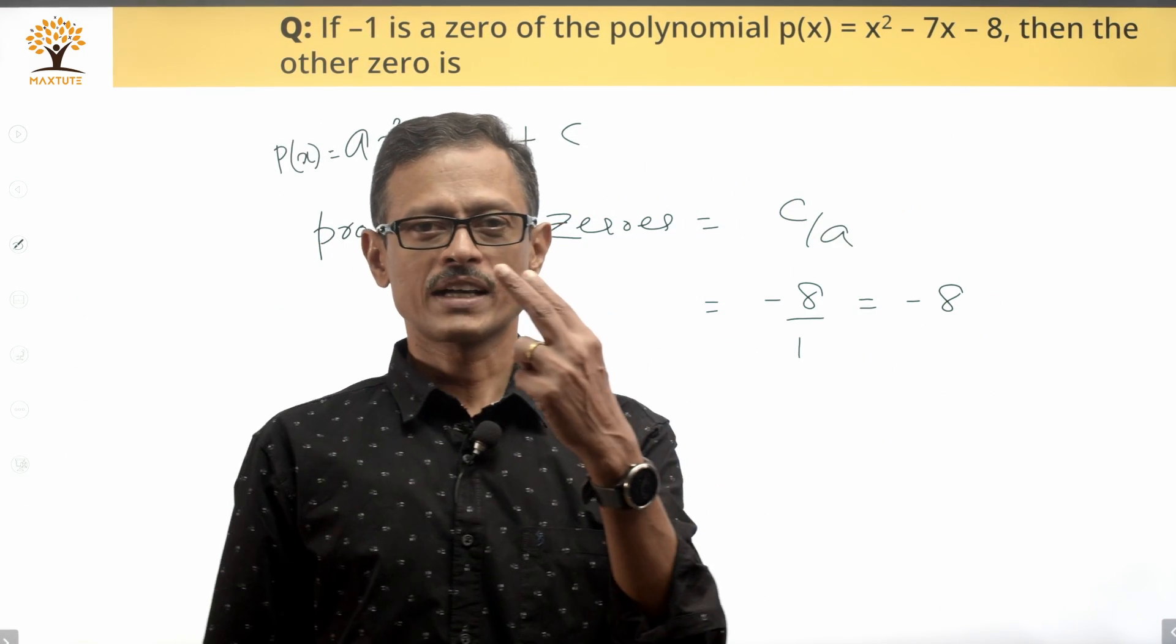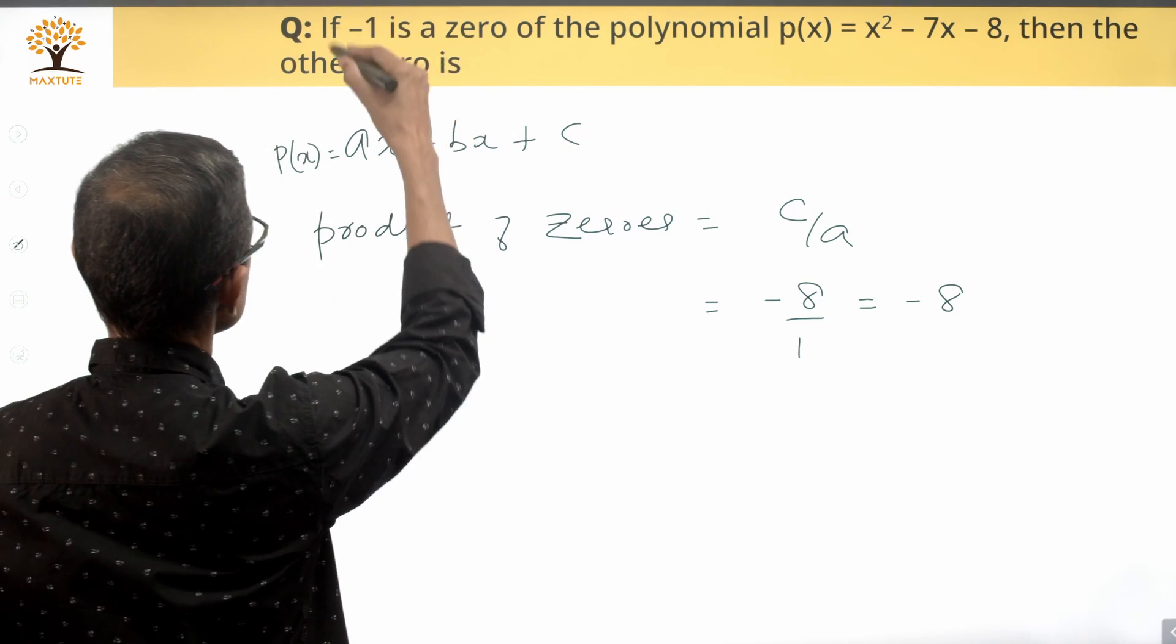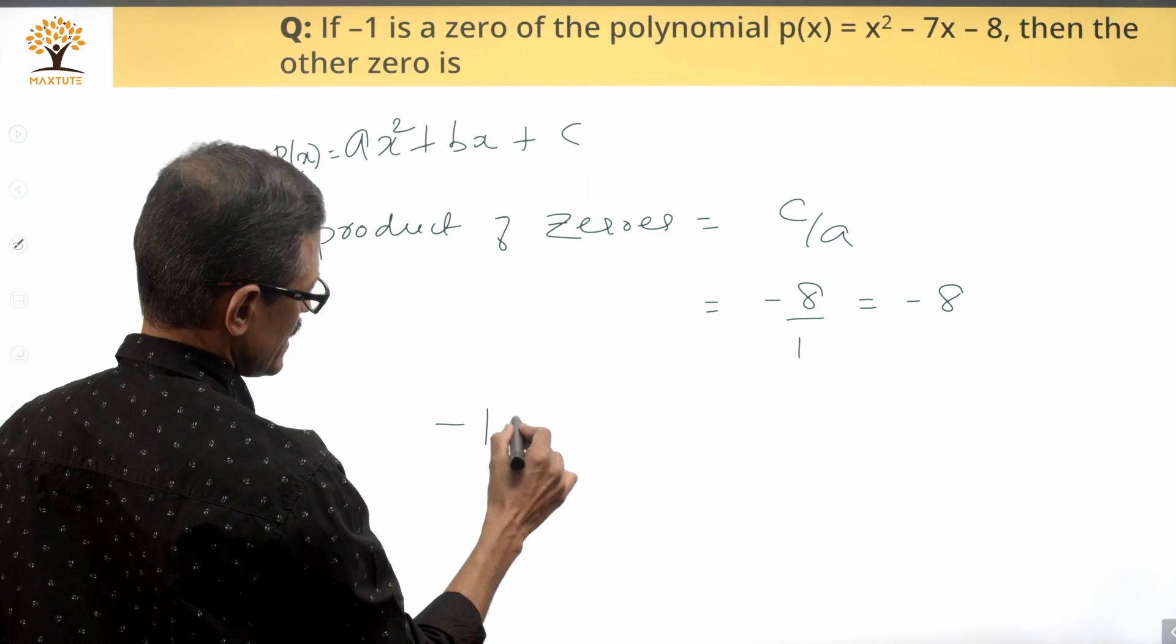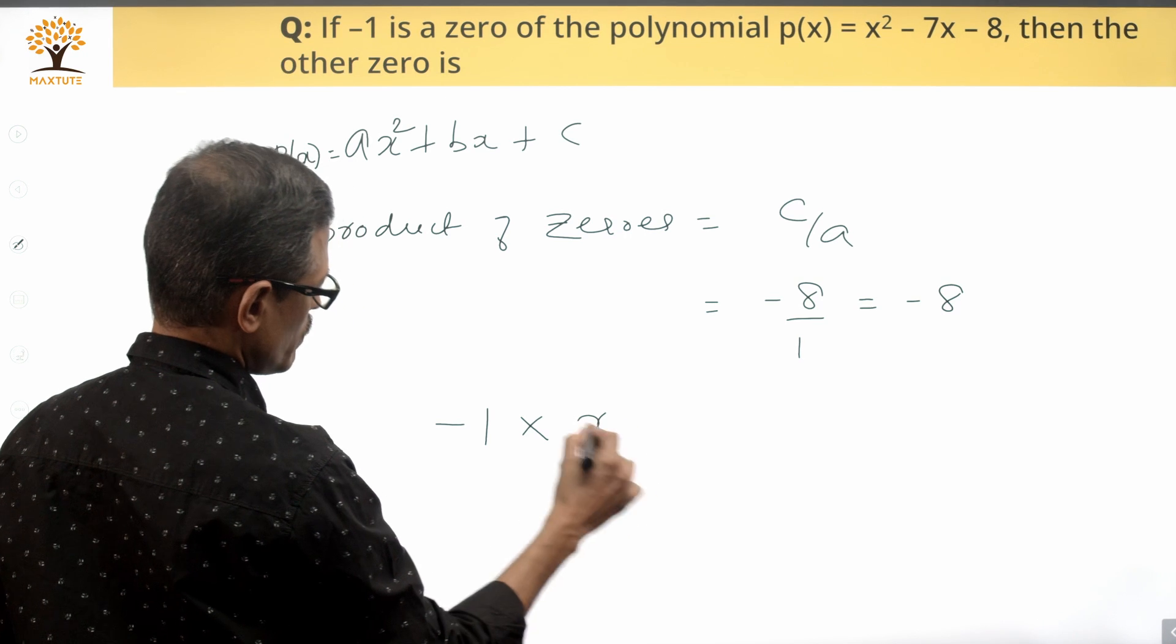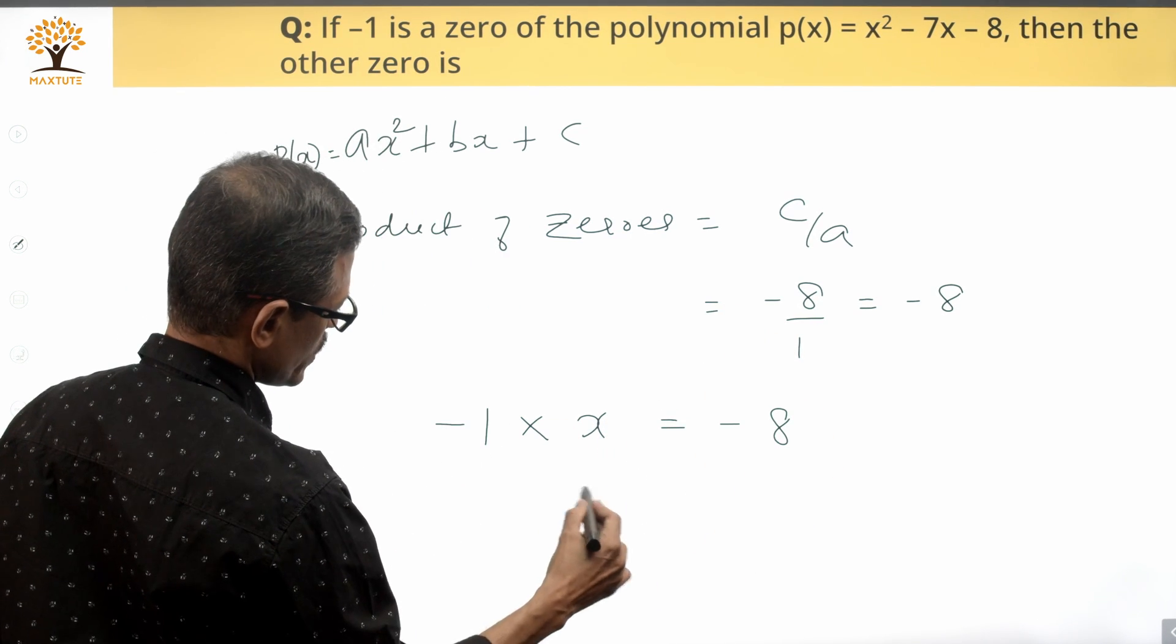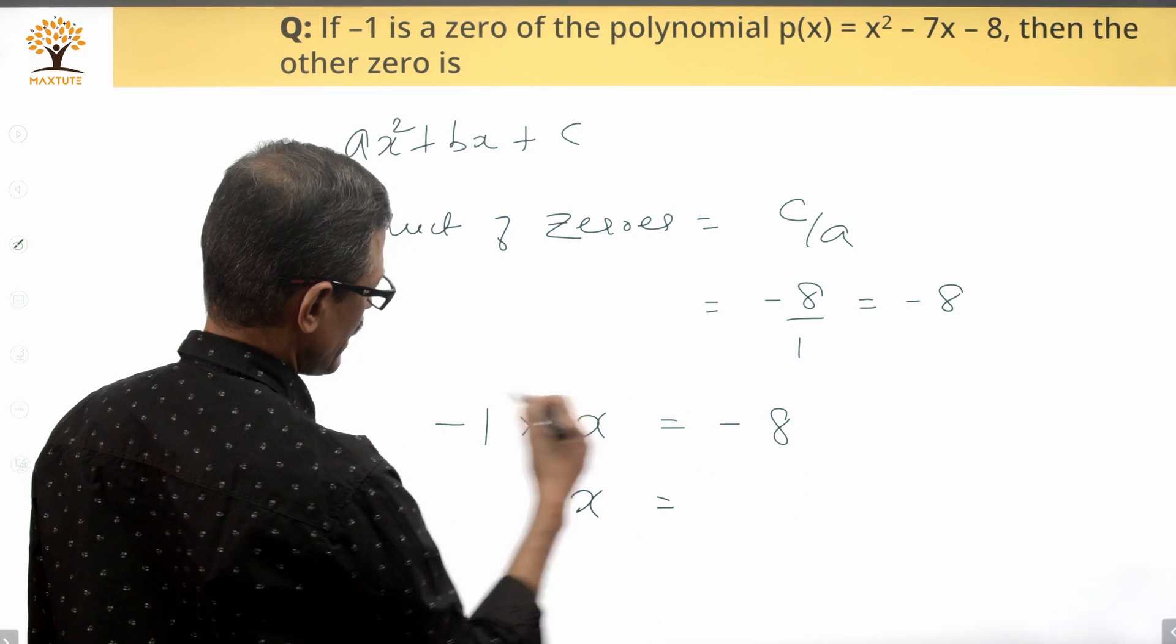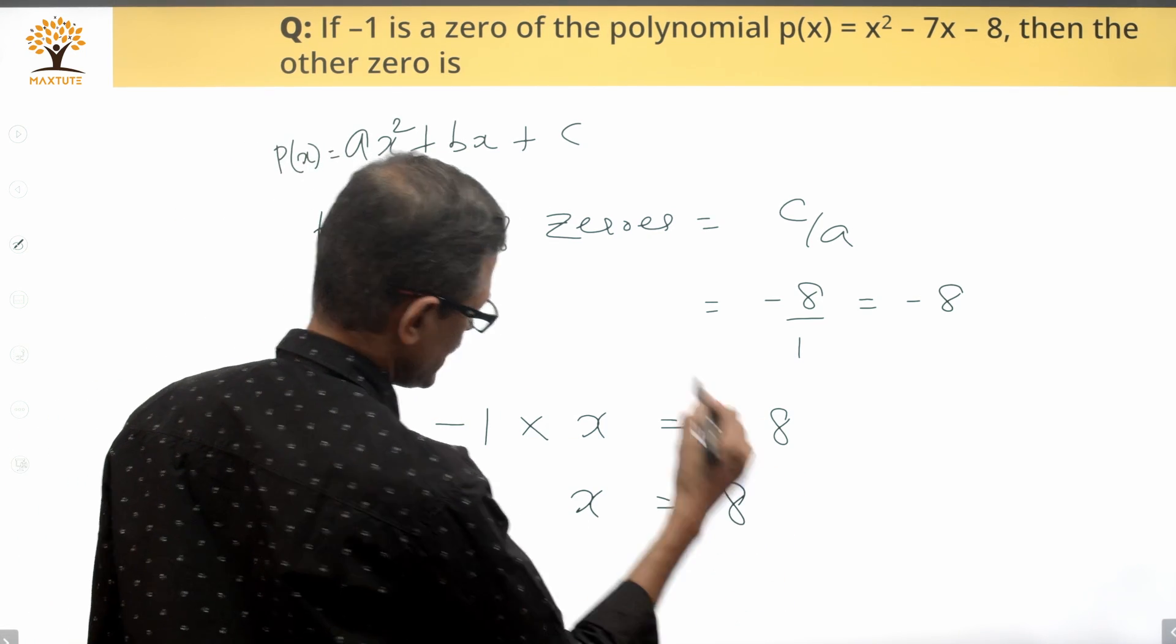It's a quadratic polynomial which means it's going to have two zeros. One zero is said to be equal to minus 1. Let's say the second zero is x. So minus 1 into x is equal to minus 8. So the second zero is equal to minus 8 divided by minus 1, which is equal to 8.